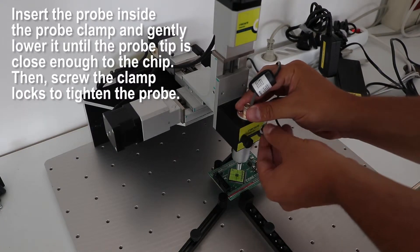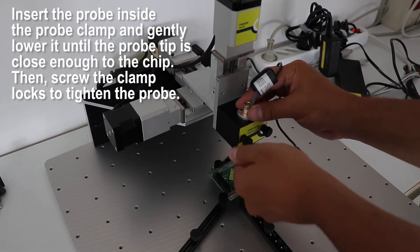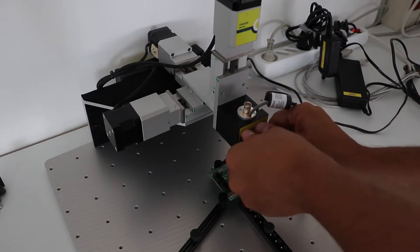Start by carefully connecting the probe to the clamp until the tip is above your target, and then screw the clamp locks to tighten the probe.